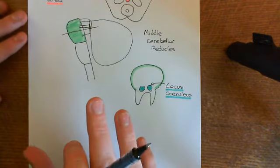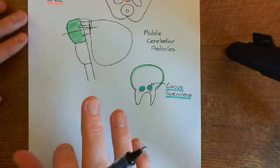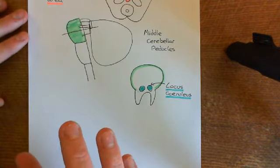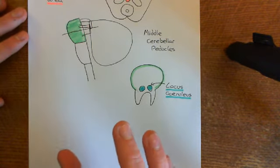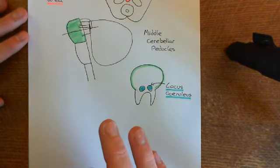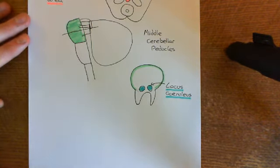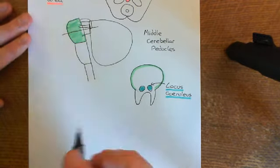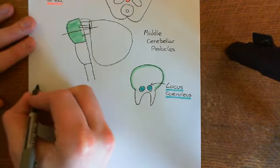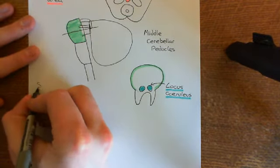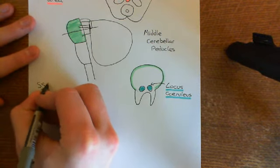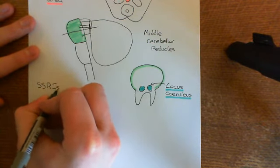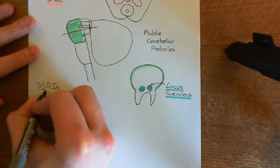We've now discussed the monoamine systems, which are fundamentally the thing which the antidepressant drugs are believed to exert their effect through. The first class of antidepressant drugs I want to discuss is a class of drugs known as the SSRIs. So, SSRIs - what does it stand for?